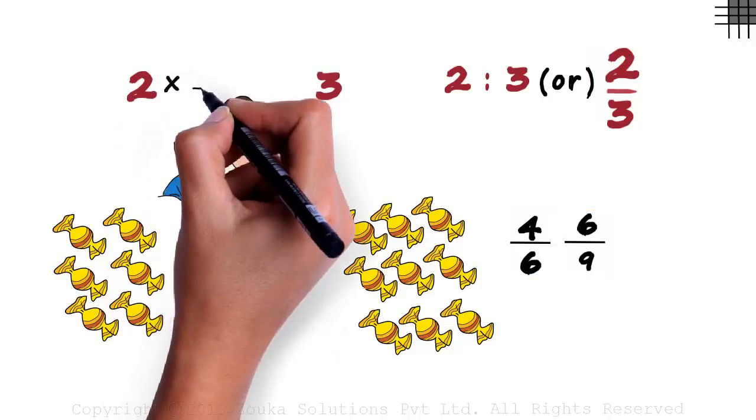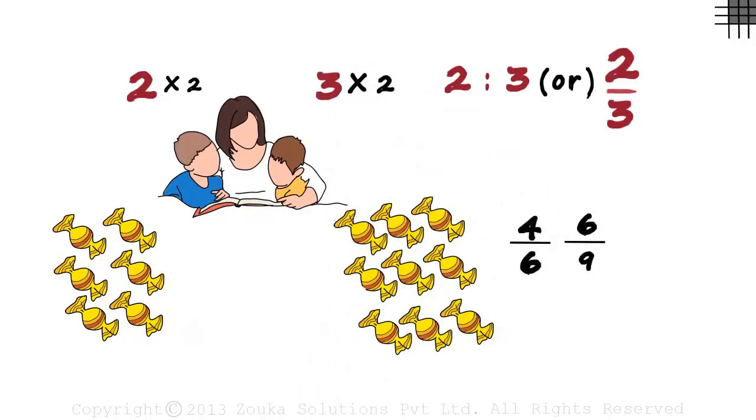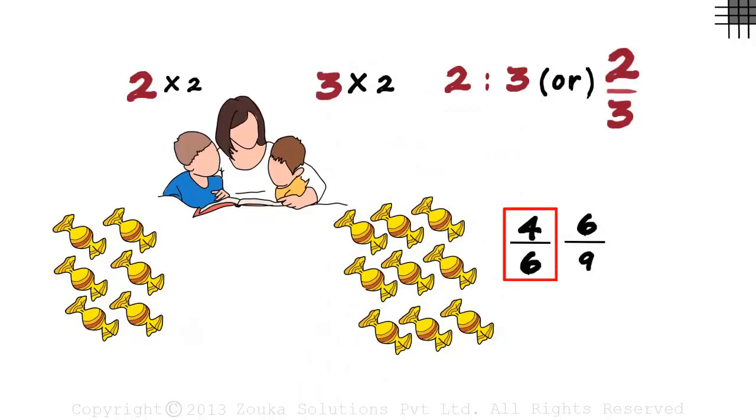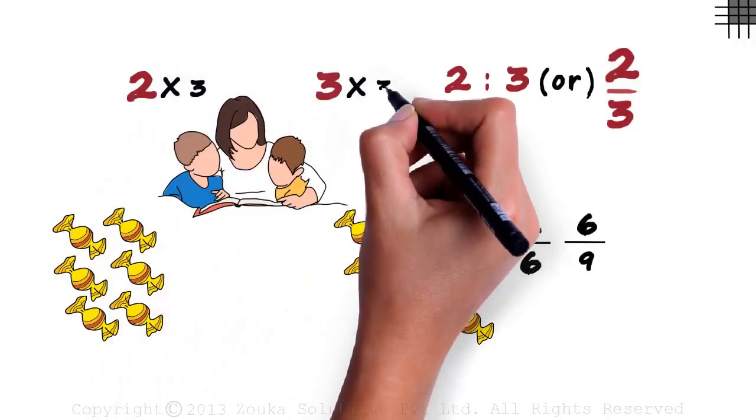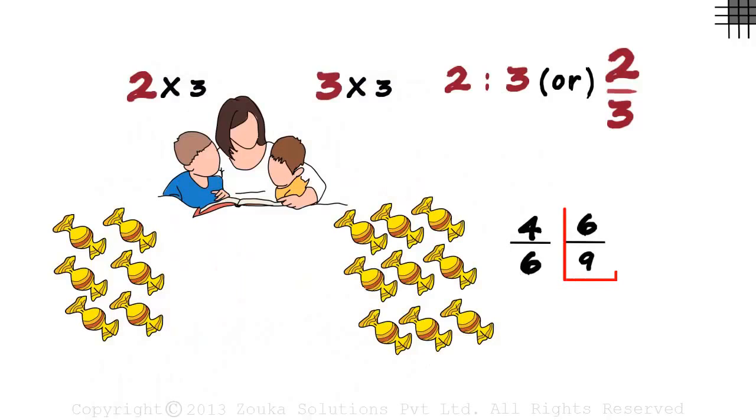If we multiply 2 with 2 and 3 also with 2, we get 4 by 6. If we multiply 2 with 3 and 3 with 3, we will get 6 by 9.